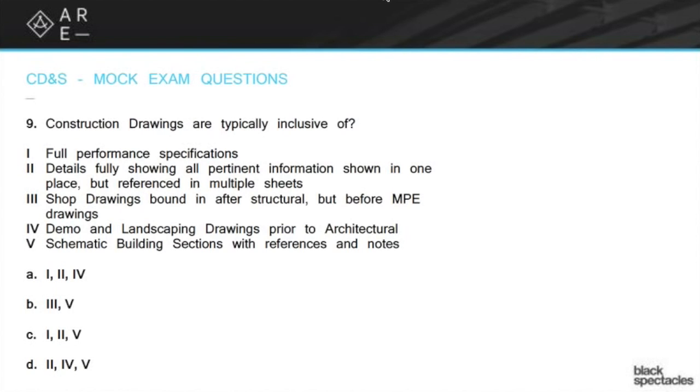So that puts us at 2, 4, and 5, which would be D. So it looks like we've got another clean sweep on this one.